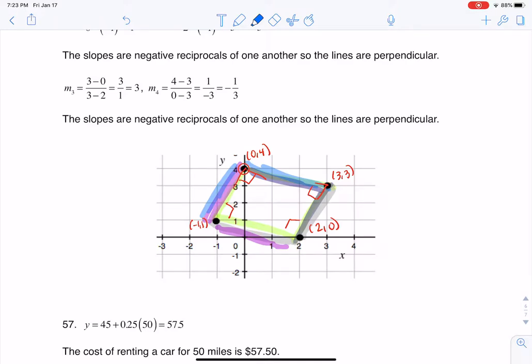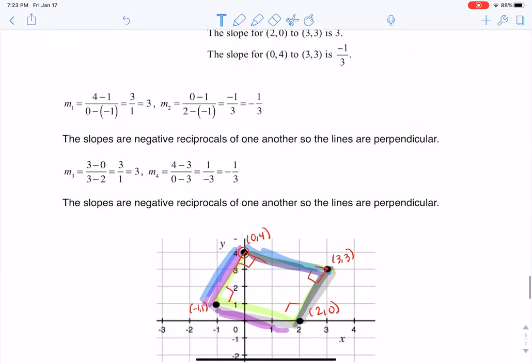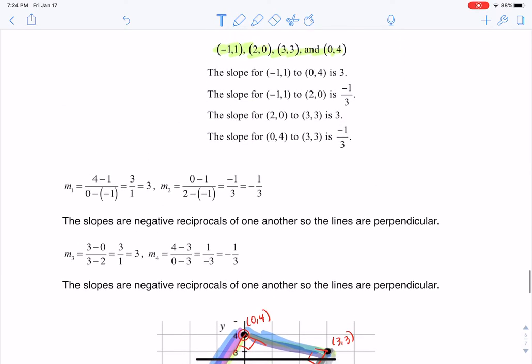So if you see my work up top, if I scroll back down, what I did was I found the slope between those sets of points. So the slope between the first set of points was 3, the next one is -1/3, then 3, and -1/3.